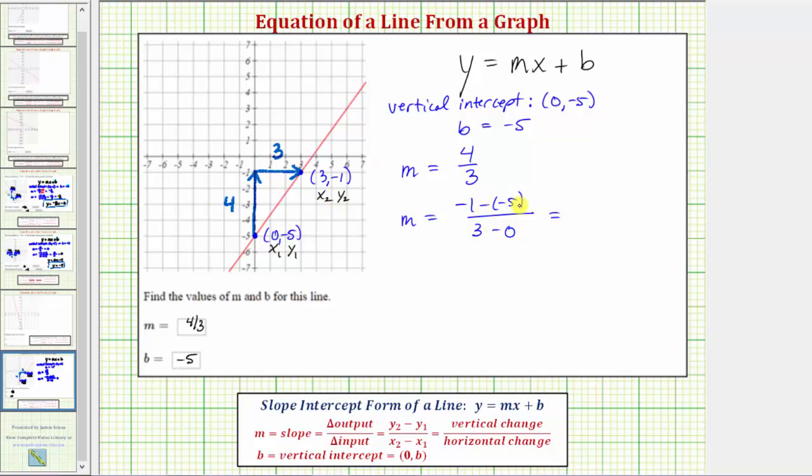Well, negative one minus negative five is equal to negative one plus five, which is four, and three minus zero is three. So of course we get the same result.